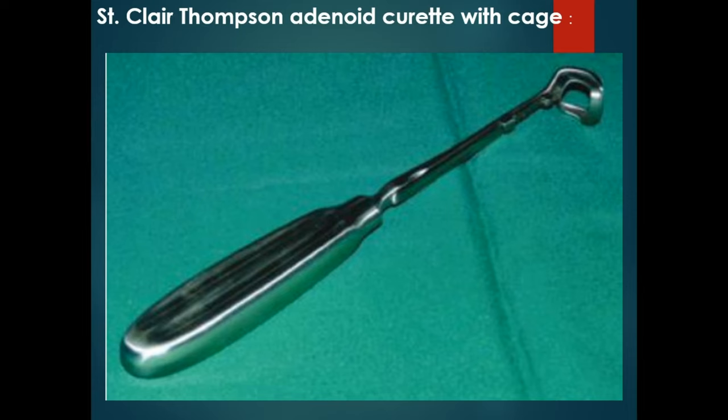Hello friends. In this video, I will be discussing the different types of adenoid curettes — mainly the Sinclair Thompson adenoid curette with cage, and the Beckmann adenoid curette without cage.